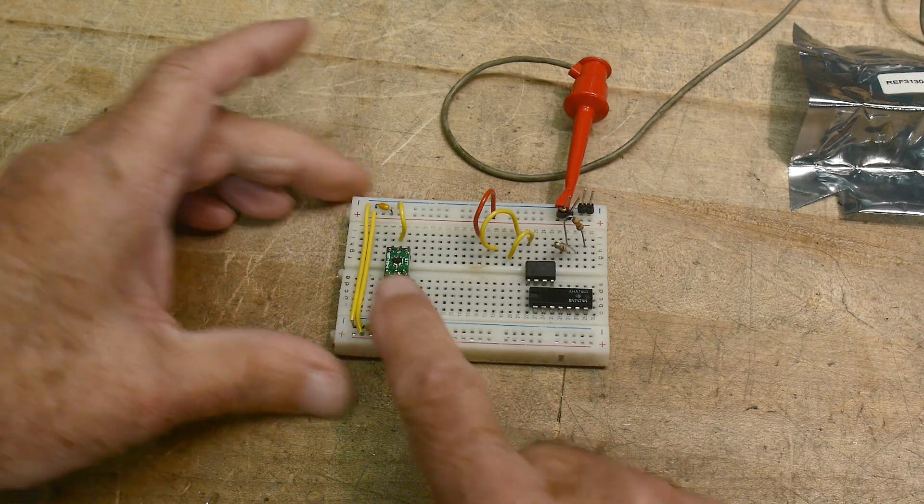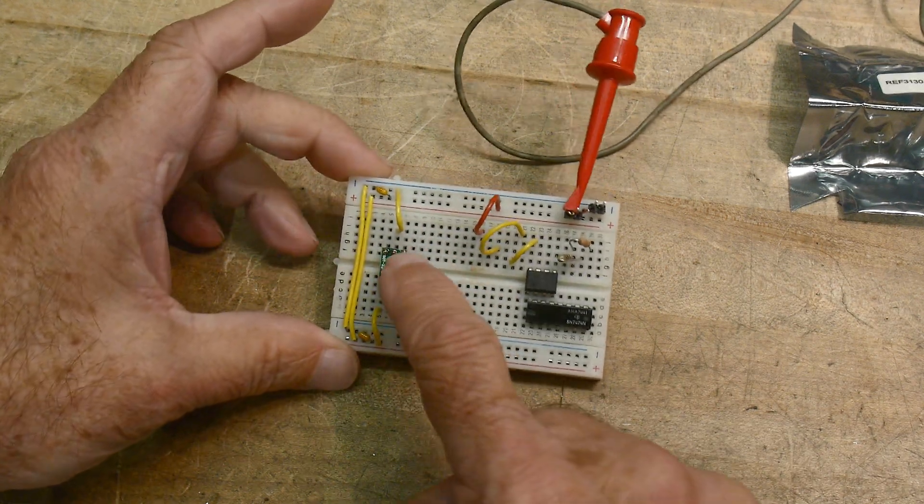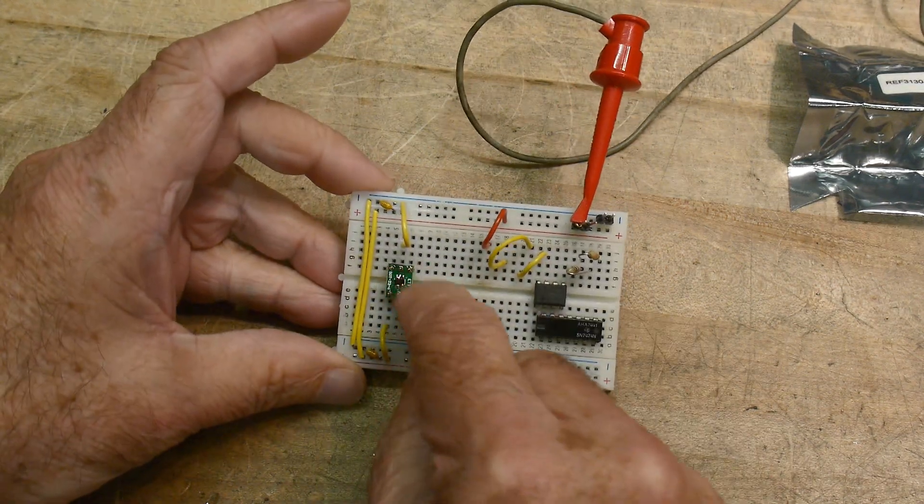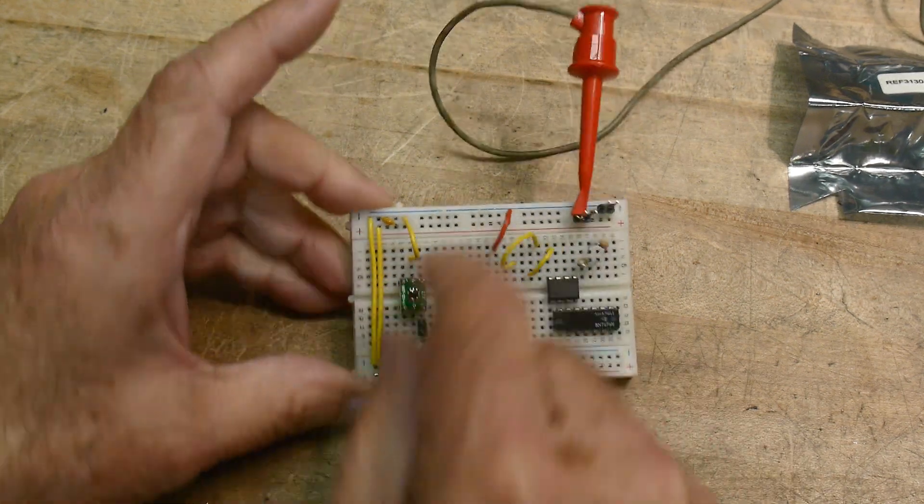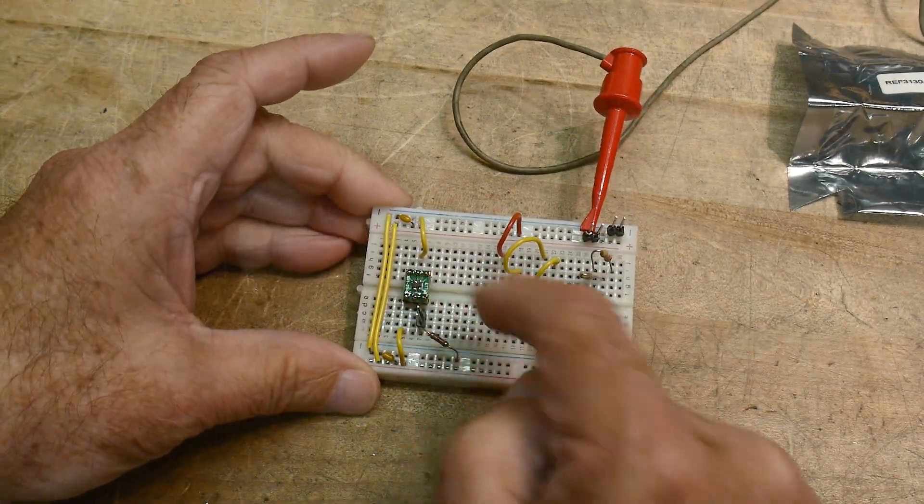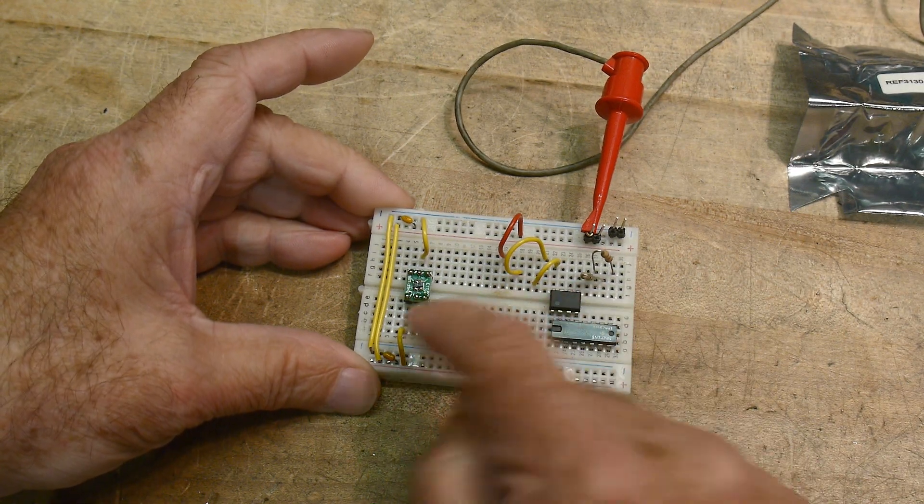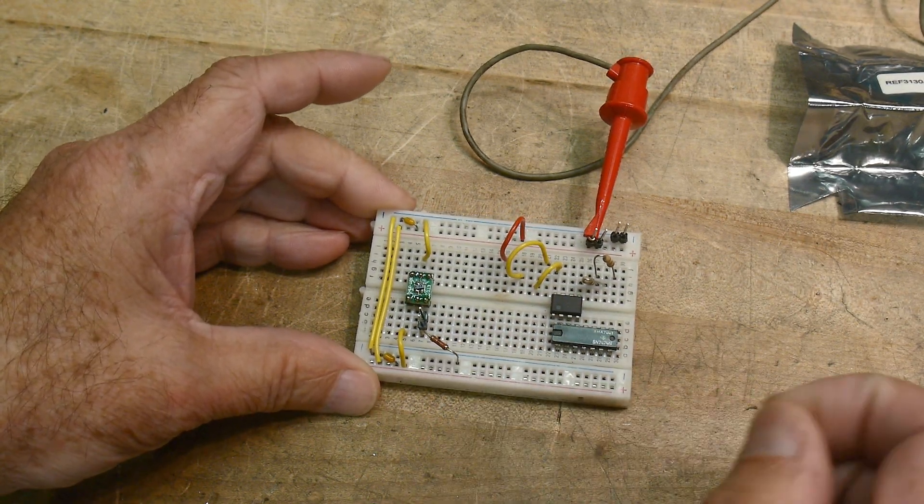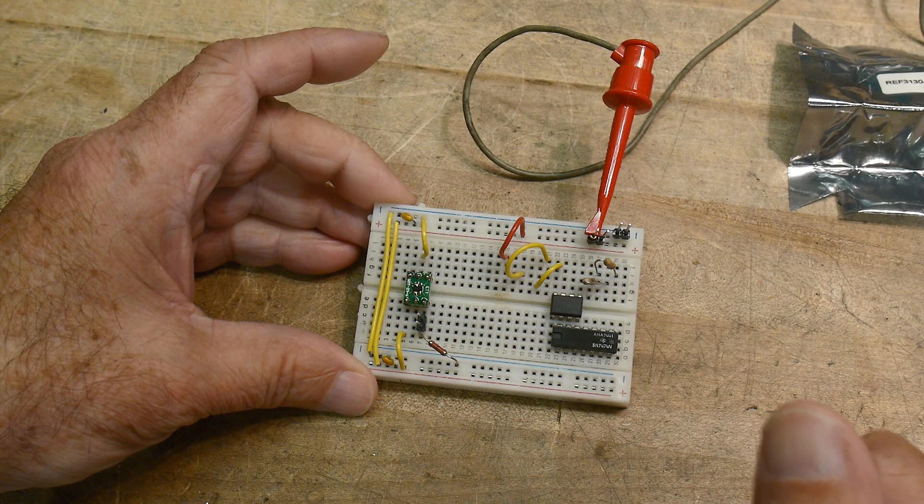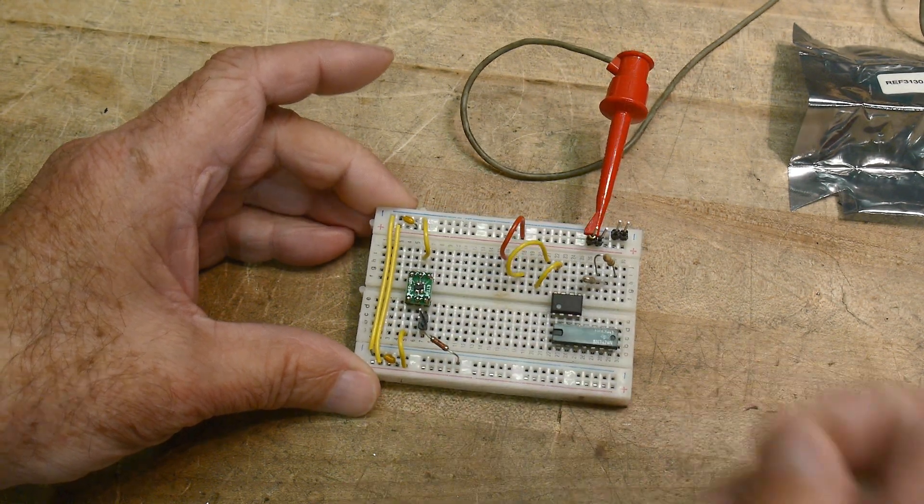Alright. So here's my little part down there. I've put it on a little board here. It's a SOT-23. So I put it in a little board that converts it to a DIP. And let's hook it up and I'm going to load it with a thousand ohms. And let's see how it does.